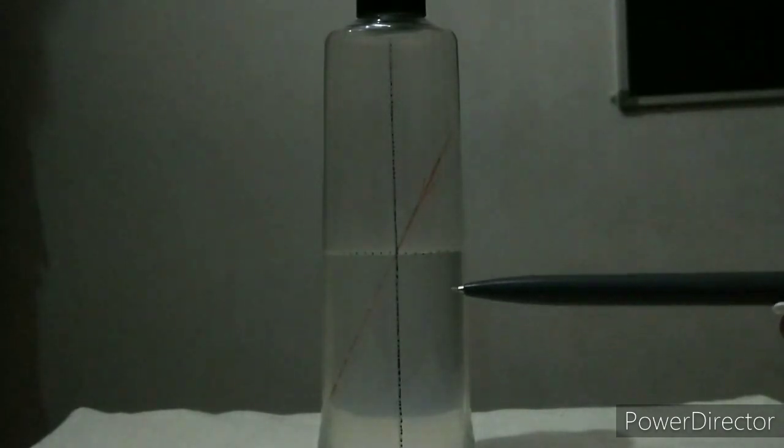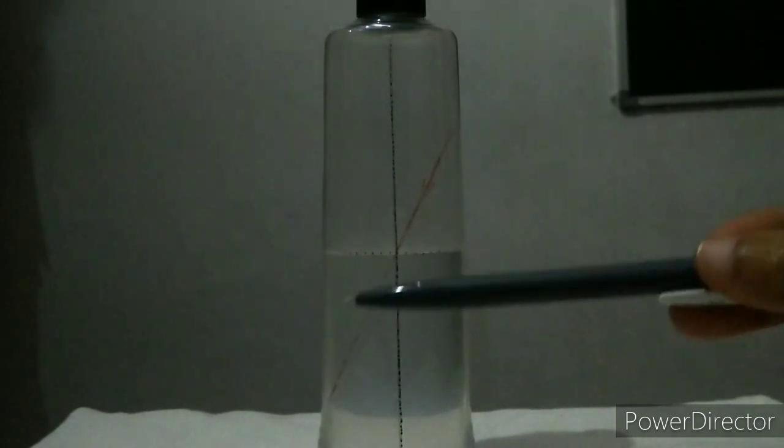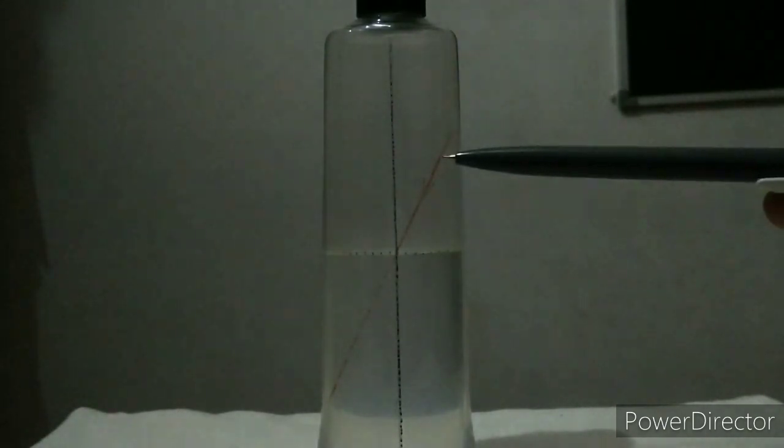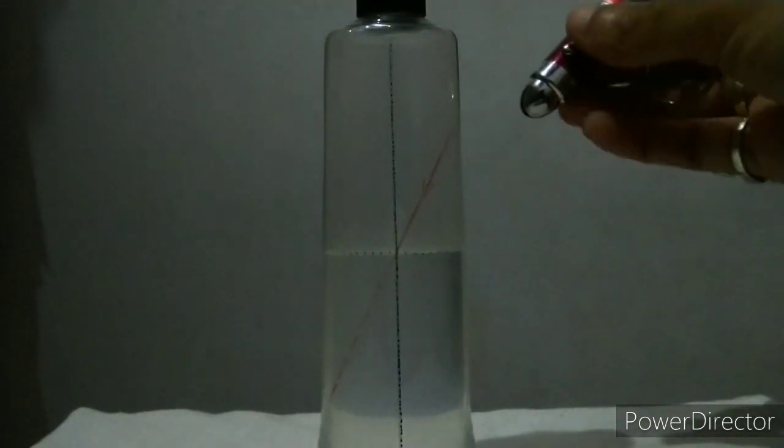This must be the path of the incident ray. We will project the incident beam of light in this direction. Now I am going to project the light along the path of the given incident ray. I have a laser torch.